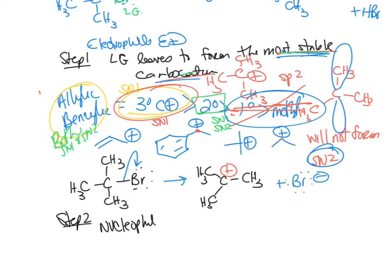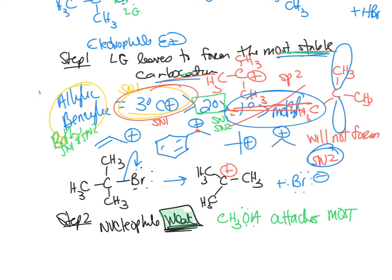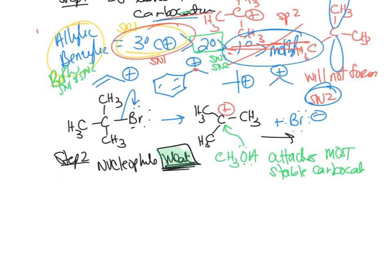Step two: the nucleophile attacks the most stable carbocation. It has to be a weak nucleophile — no charges. Methanol is a weak nucleophile. The nucleophile comes in and you draw that product. It can come from the top or the bottom, so you do not have any stereochemistry like you did in SN2. Notice the oxygen is now positively charged — bonded to three things: hydrogen, CH3, and the carbon.